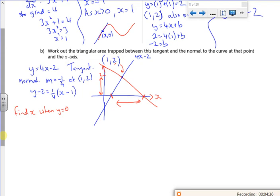So when y is 0, so for y = 4x - 2. No, no, no, y is 0. Right, no, no, y is 0. So I've got 0 = 4x - 2. I take the 2 over, divide by 4, I've got a half for x. So I know that that's at a half.